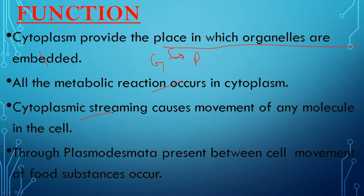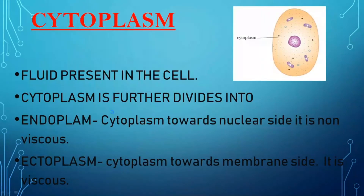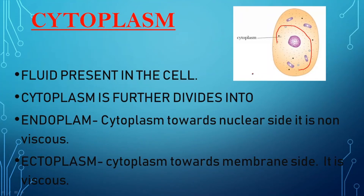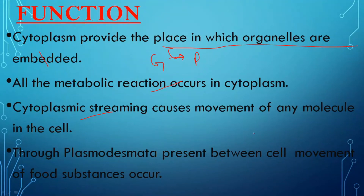Third, cytoplasmic streaming causes movement of any molecule in the cell. Cytoplasmic streaming means — in eukaryotic cells the cytoplasm has a property of movement, also called cyclosis. This means a portion of cytoplasm here can move and reach another location. Due to this streaming, substances present in the cytoplasm also move, enabling movement from one location to another within the cell.